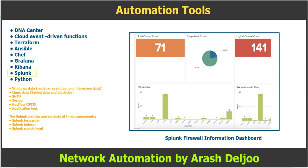Although known in the networking industry for its security capabilities, Splunk is on the list of automation tools due to its data ingestion capabilities. It can ingest many different types of data including the following network-related types: Windows data like registry, event log, and file system data; Linux data; syslog data and statistics; SNMP; syslog; NetFlow or IPFIX; and application logs.